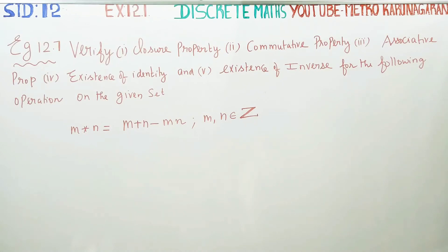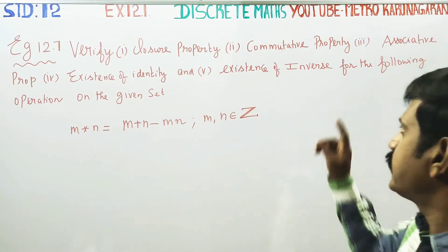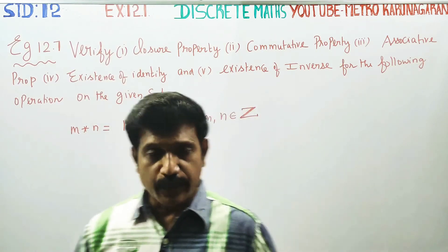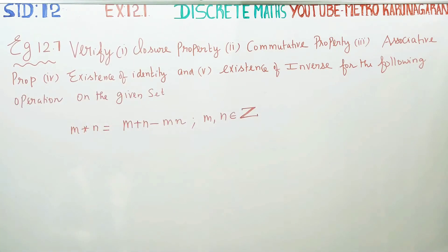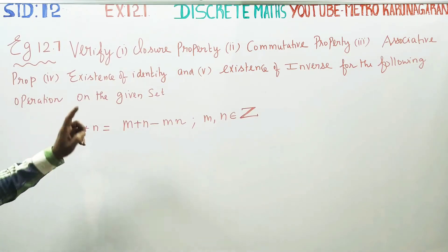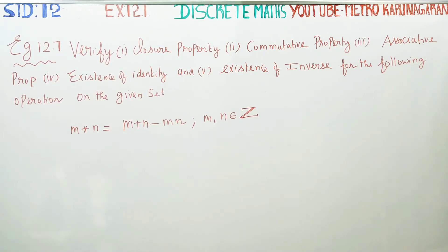Dear 12th standard students, in exercise number 12.1, example 12.7, we will verify the closure property, commutative property, associative property, existence of identity, and existence of inverse for this binary operation.